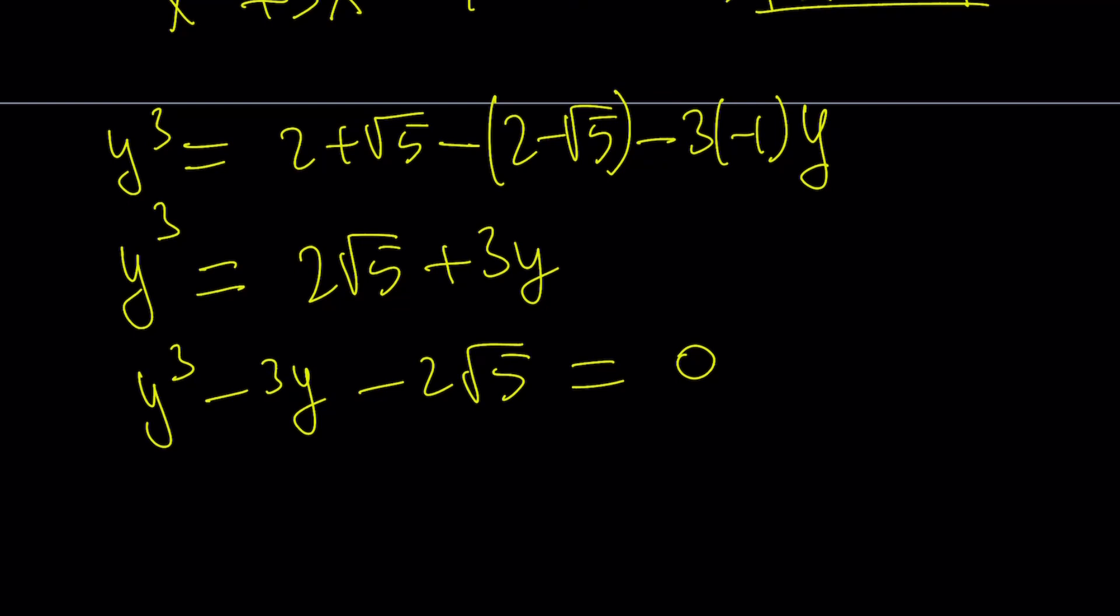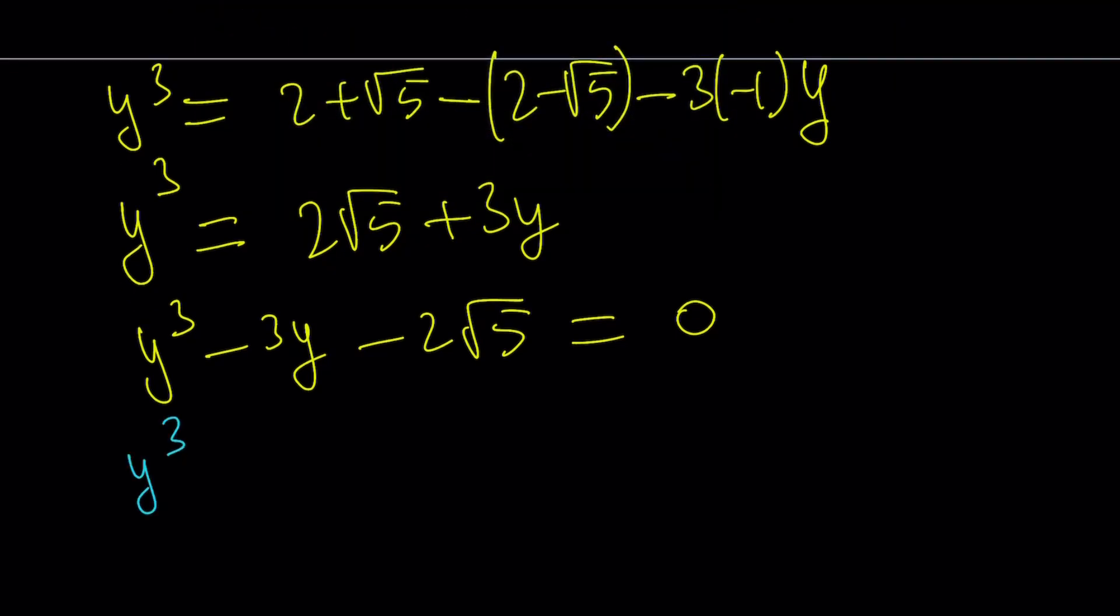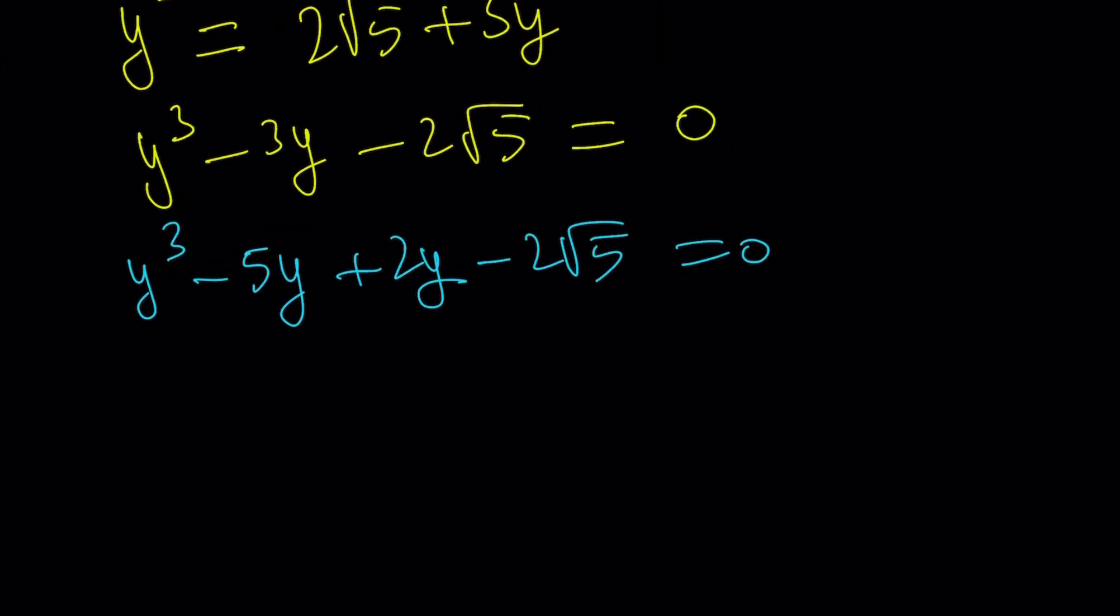We have two options here. I know the first one is kind of hard to see, but if you see what I see, that would be really awesome. I'm going to split up the negative 3y into negative 5y plus 2y. I mean, practice, we can do it, right? But is it helpful? Extremely. Now, take a look at this. I can go ahead and factor by grouping. This is y times y squared minus 5. This is 2 times y minus root 5 is equal to 0.